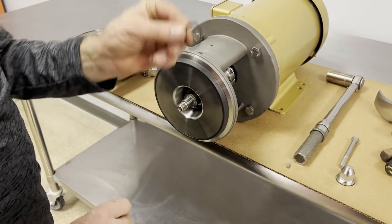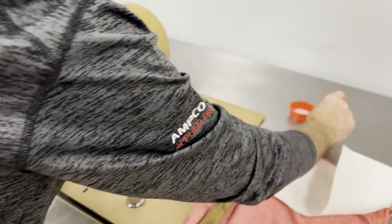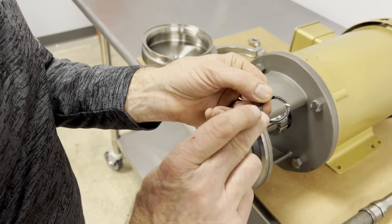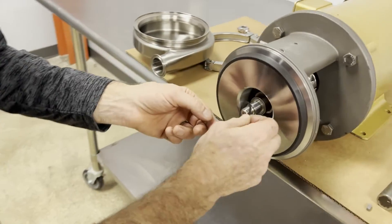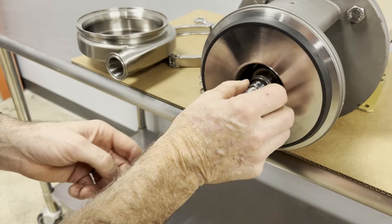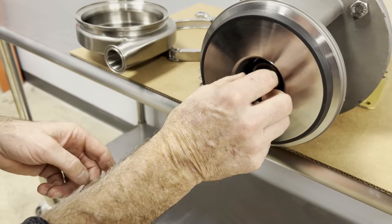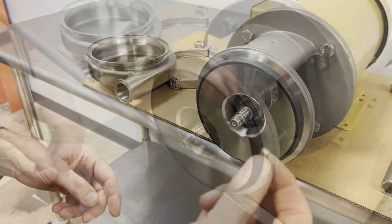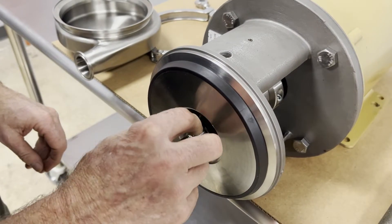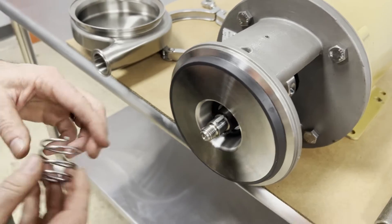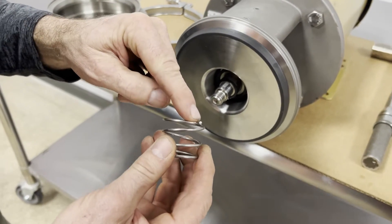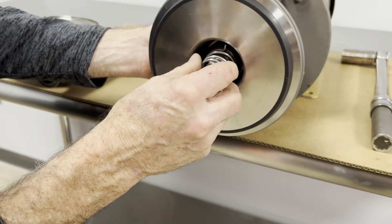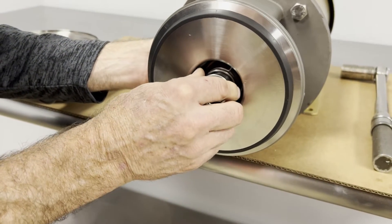I'm going to take the gasket that goes on the stub shaft. I'm going to put a dab of food safe grease, put that into its cavity. Now the key, and then the spring goes back. There's a notch that corresponds to this tab. You want to get those lined up.